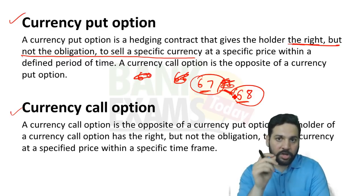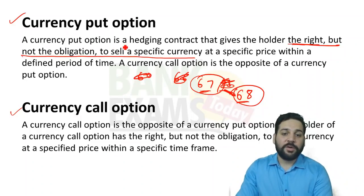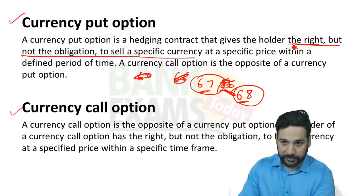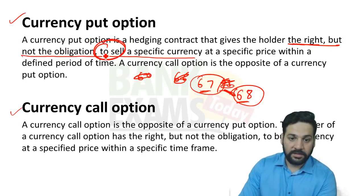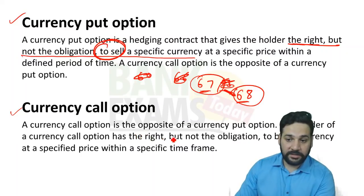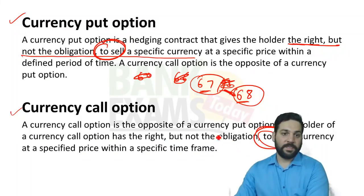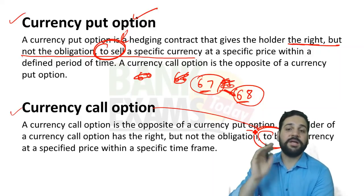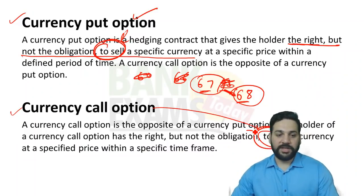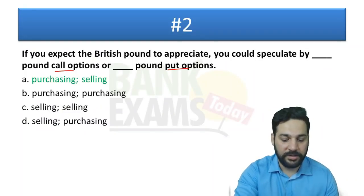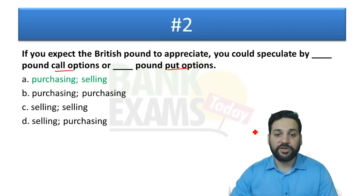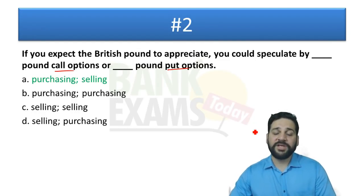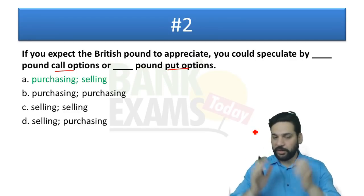A currency put option gives the holder the right to sell, while a currency call option gives the right to buy at a pre-determined price — you pay a premium for that right. So if you expect the British pound to appreciate, you speculate by purchasing call options and by selling put options. These are two very important concepts.